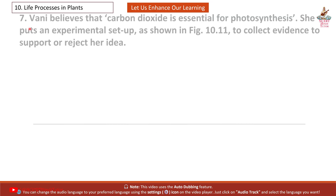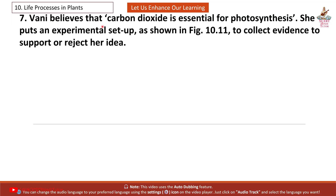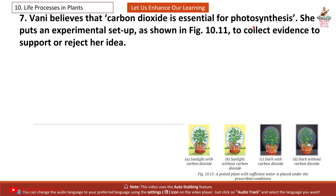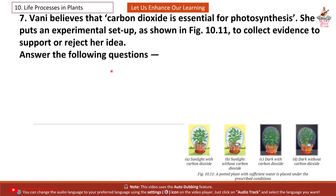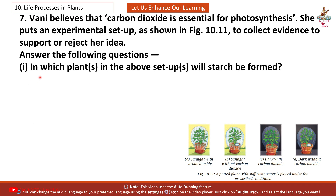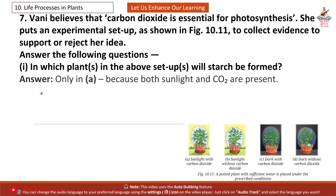Question 7: Vani believes that carbon dioxide is essential for photosynthesis. She sets up an experimental setup (figure 10.11) to collect evidence to support or reject her idea. Question 1: In which plant in the above setup will starch be formed? Answer: Only in plant A, because both sunlight and CO2 (carbon dioxide) are present.